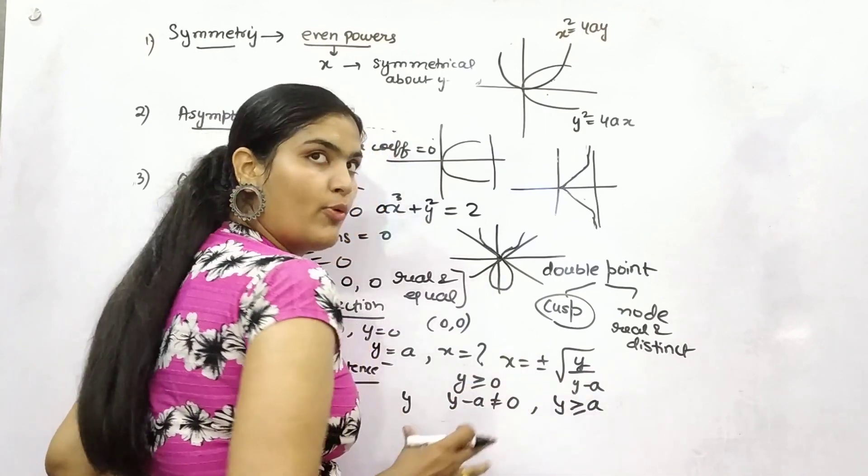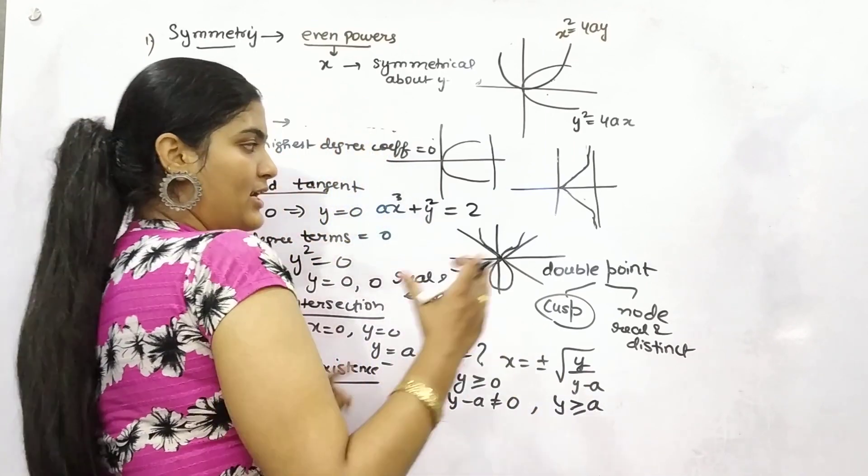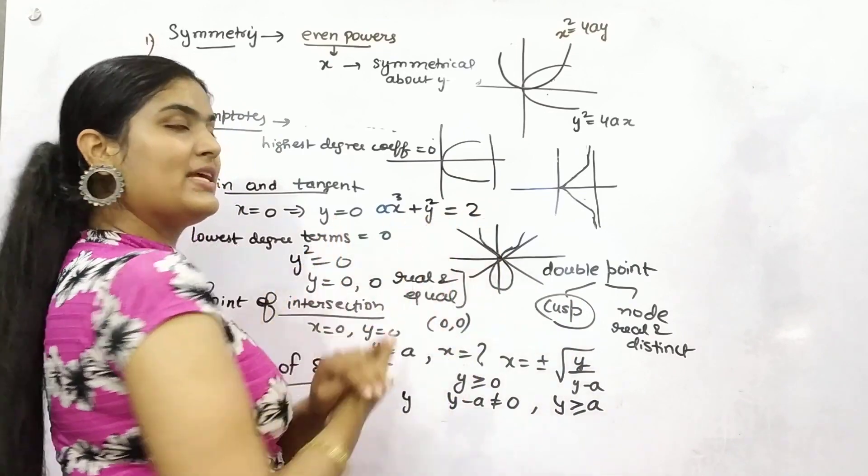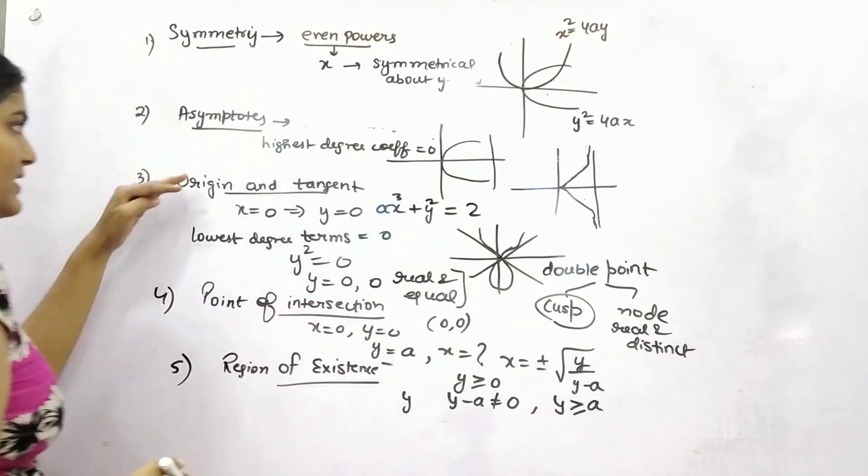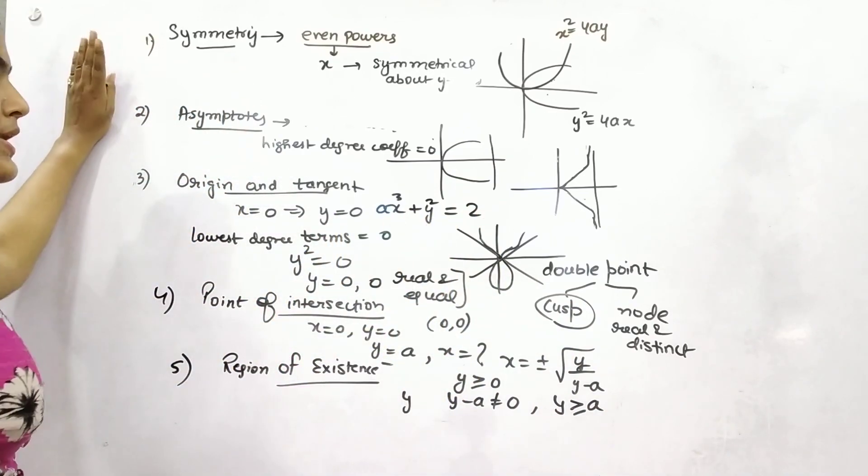So a and 0 will be your points, and you need to trace the curve using all these things.